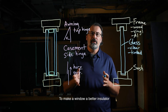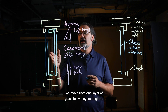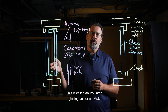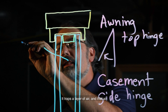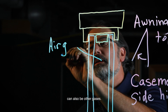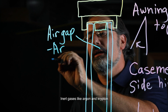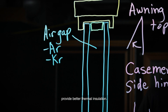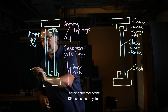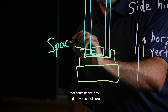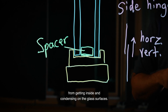To make a window a better insulator, we move from one layer of glass to two layers of glass. This is called an insulated glazing unit, or an IGU. It traps a layer of air, and that air can also be other gases. Inert gases like argon and krypton provide better thermal insulation. At the perimeter of the IGU is a spacer system that contains the gas and prevents moisture from getting inside and condensing on the glass surfaces.